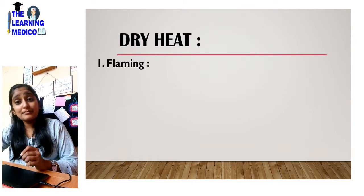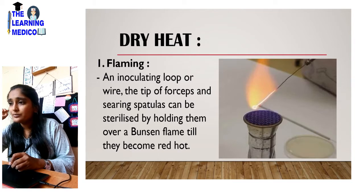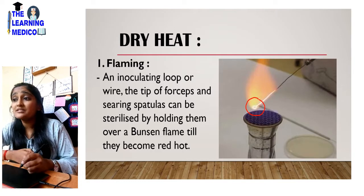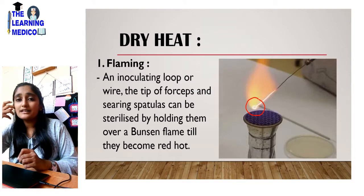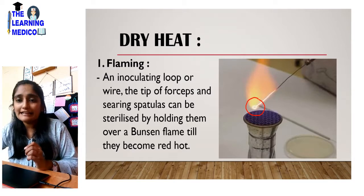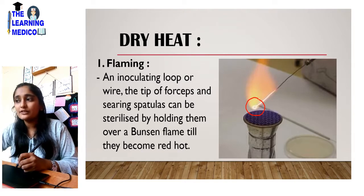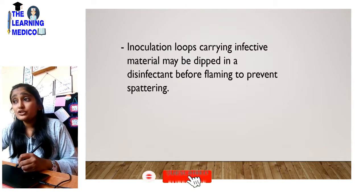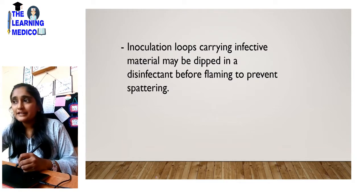In dry heat, the first method is flaming. In the diagram, you can see a wire or inoculating loop. The tip of the forceps and the scalpel can be sterilized by holding them over a flame until they become red hot. Infective material may be dipped into disinfectant before flaming to prevent spattering.